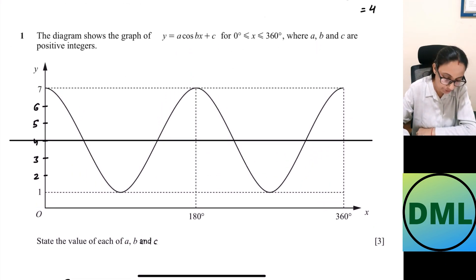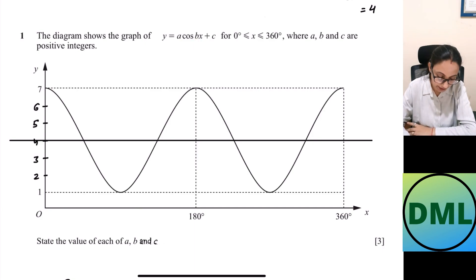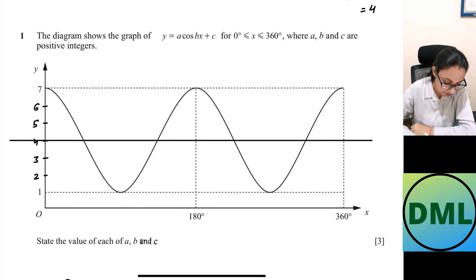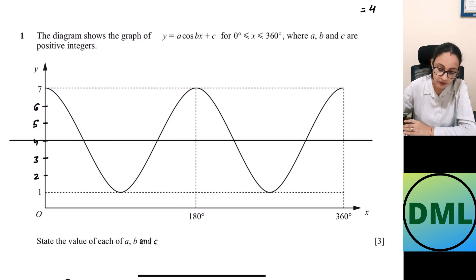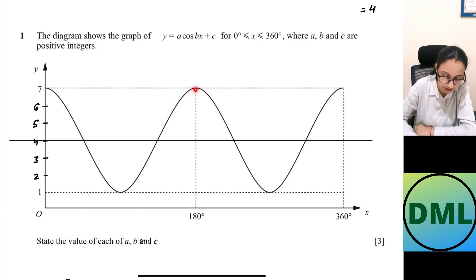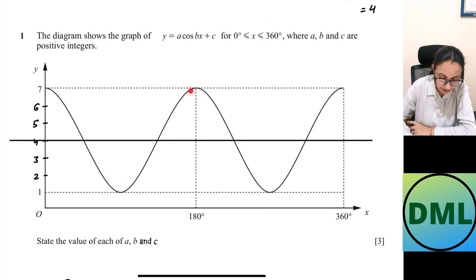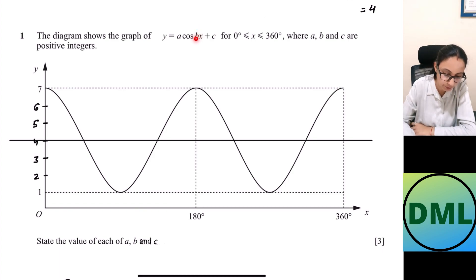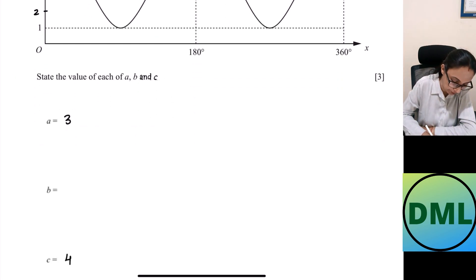Now I need to get the answer for b. b shows the number of cycles inside your period. Our graph starts from 0 degrees to 360 degrees, so 360 degrees is the period. Counting cycles inside 360 degrees: first cycle, then again the cycle starts — there are 2 cycles inside 360 degrees. The value for b is 2.